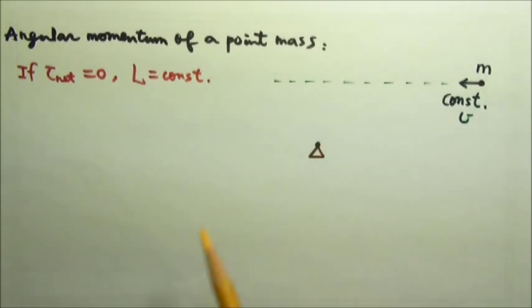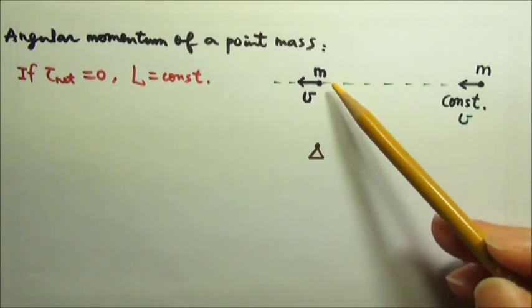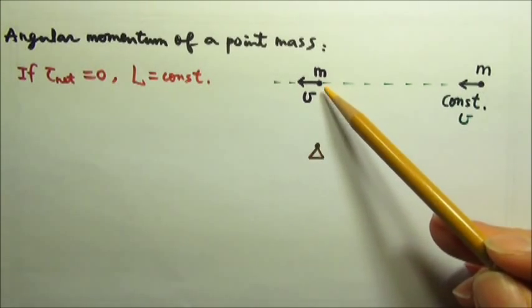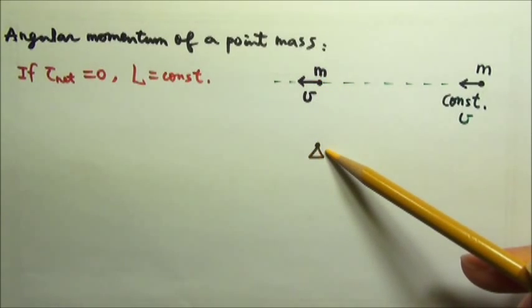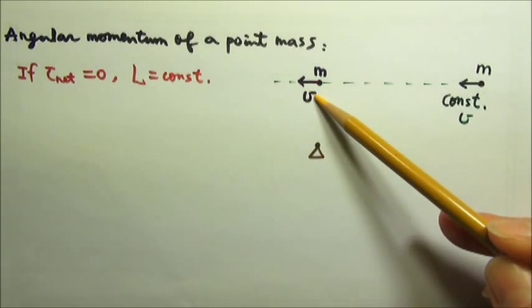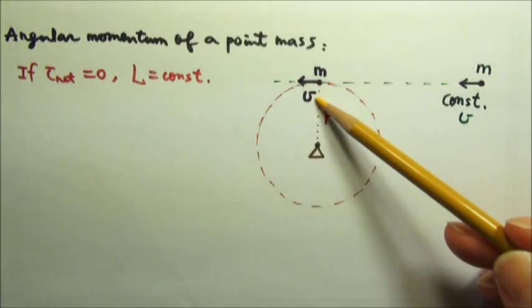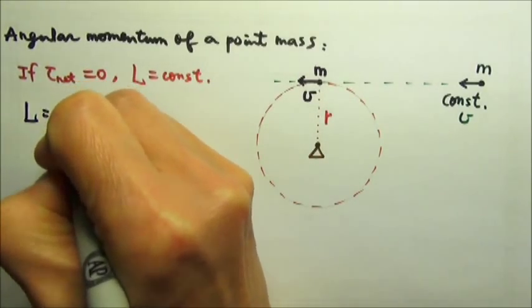In this case, the easiest place to look at is right here. When the mass is here, moving at a velocity V, the point mass would look exactly the same as a point mass that is doing circular motion around this axis at speed V. For a point mass circling around the axis at speed V, its angular momentum is I omega.